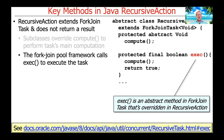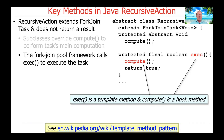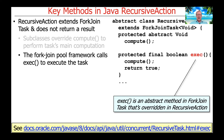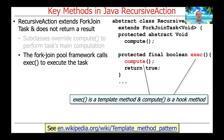Under the hood, there's an exec method in the RecursiveAction class, and that's what's called by the Java ForkJoinPool framework. It will be used to call the compute hook method. This is the template method pattern — exec is the template method and compute is the hook method. You define compute, and exec calls it. This is the classic Gang of Four template method pattern.